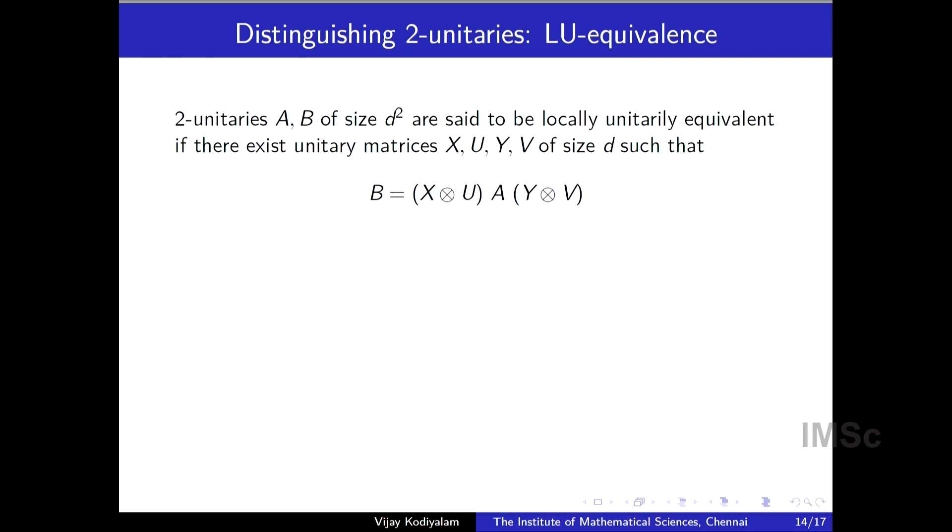At this point, we can ask, now, it's difficult to construct the solution. So you can ask, is that the only solution? Are there more solutions? Which brings us to, what is only solution? What does only solution mean? What distinguishes one solution from another? And a natural way to distinguish two matrices of size D square in this context is by, you say, B and A are equivalent. Both of them are two unitaries. If B is X tensor U, A, Y tensor V, for unitaries X, U, Y, V of size D. So pictorially, it is this. So B can be written this way. In which case, one can show that any picture invariant that you can construct from the B is the same, has the same value as a picture invariant that you can construct from the A. And that's easy to see.